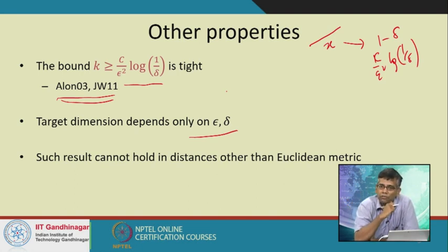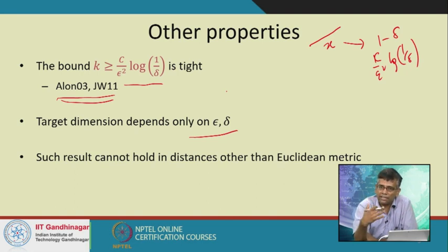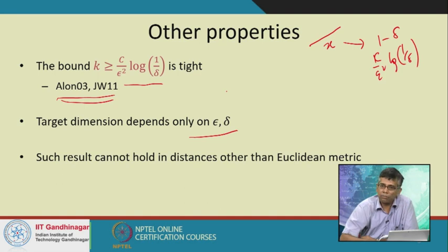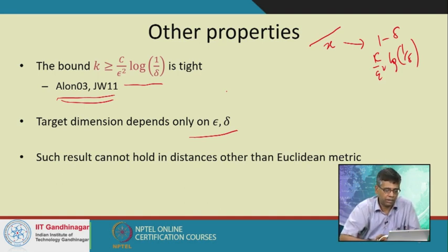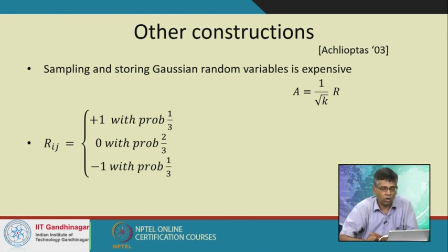Another very interesting and non-trivial result is that such a result cannot hold in L1, and in a strong sense this result more or less characterizes the Euclidean metric. These are all fairly theoretical results we will not go into the details of, but they are very insightful and good to know. Now let us talk about other ways of creating this matrix.